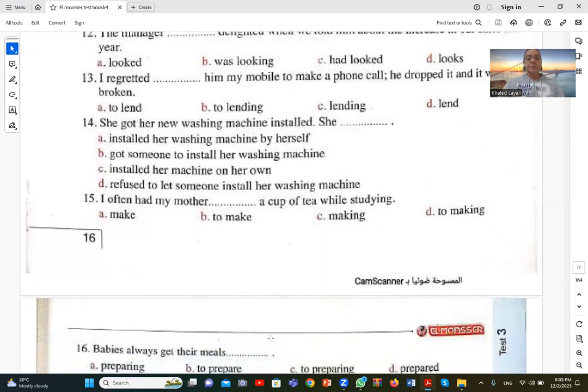Number fifteen. I often had my mother make a cup of tea while studying. To have someone do something, use the base verb. Have my mother make a cup of tea. كنت أطلب من والدتي تعمل لي كباية شاي وأنا بذاكر. Have somebody do something like make or prepare, not to make or to prepare. I had my mother make a cup of tea. A is correct.